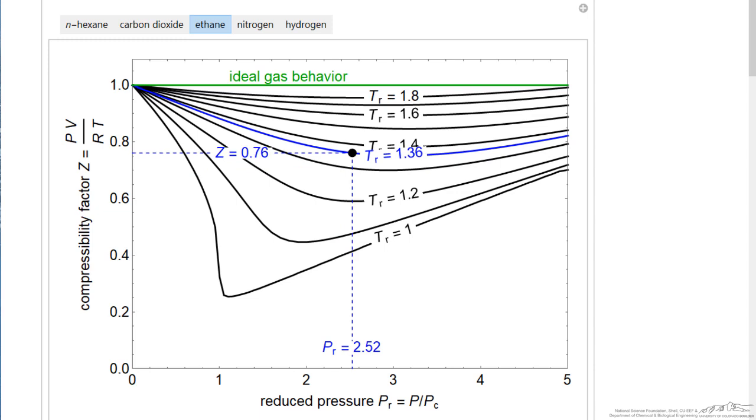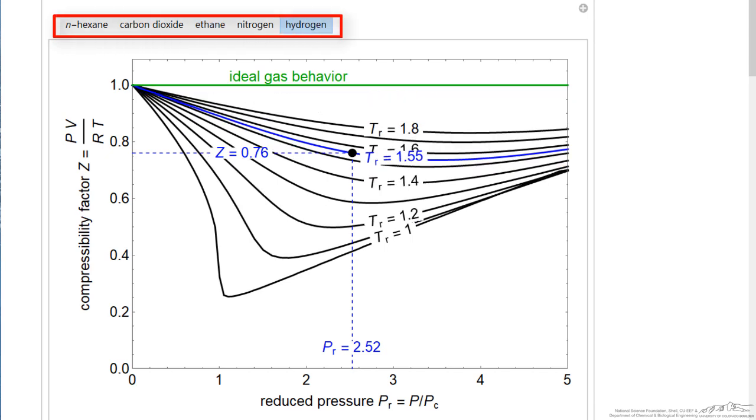We can select a reduced pressure and a reduced temperature and then read off the value for Z. If I switch to hydrogen, then for same conditions, of course we're expecting different behavior.